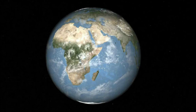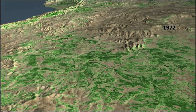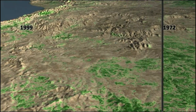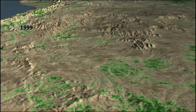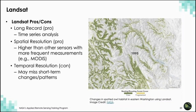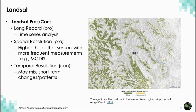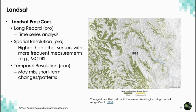Landsat is one of the most prolific satellites for monitoring Earth's ecosystems. This visualization shows one location in western Tanzania where the Jane Goodall Institute works, focusing on the Gombe National Park. It shows changes in forest cover between 1972 and 1999, with forested areas in green and non-forested regions in brown. As mentioned, there are pros and cons to Landsat data: we have a long period of record, and the resolution is higher than many NASA satellites, but the revisit time is every 16 or 8 days when using different Landsat satellites.